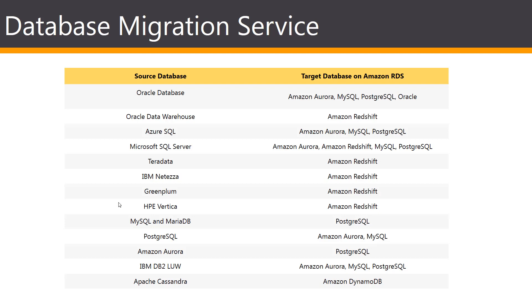During this process, the schema tool performs cloud-native code optimization by converting legacy Oracle and SQL Server functions to their equivalent AWS services, helping you modernize the application at the same time as the database migration. Once schema conversion is complete, the tool can help migrate data from a range of data warehouses to Amazon Redshift using built-in migration agents. The table on screen shows the conversions the tool currently supports.